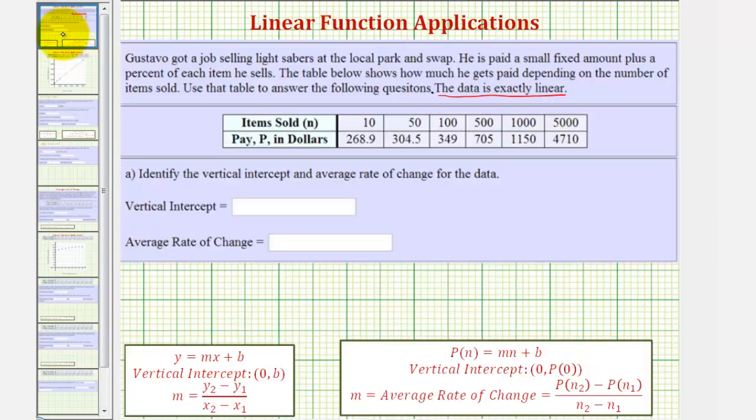For the first part, we're asked to find the vertical intercept, which is the same as the y-intercept, and also to find the average rate of change, which, because our data is exactly linear, is constant and would be the slope of the line passing through all six points. Looking below, we have notes for a linear equation in terms of x and y and also using function notation.